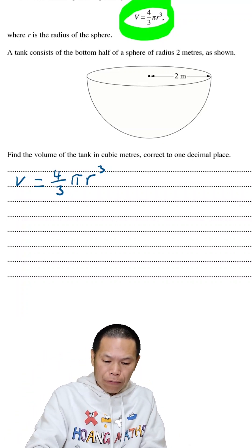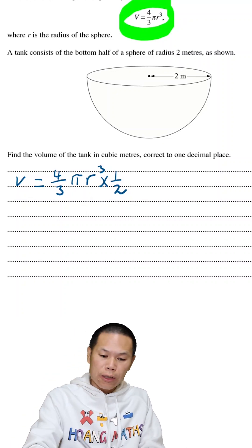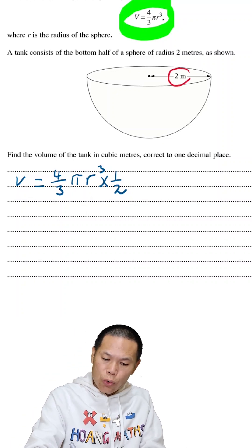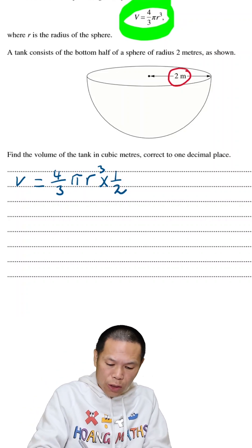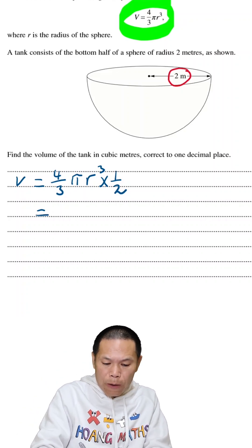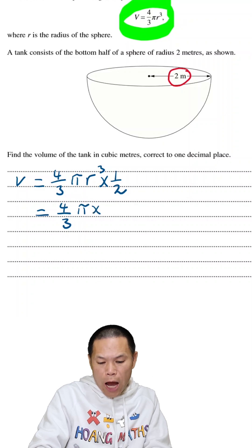We know that the radius is 2 meters, so r = 2. We substitute into this formula: 4/3 π times 2³, and we multiply by 1/2.